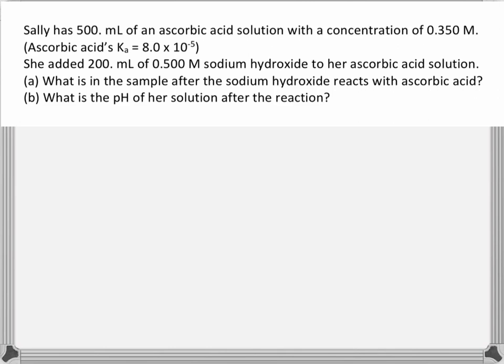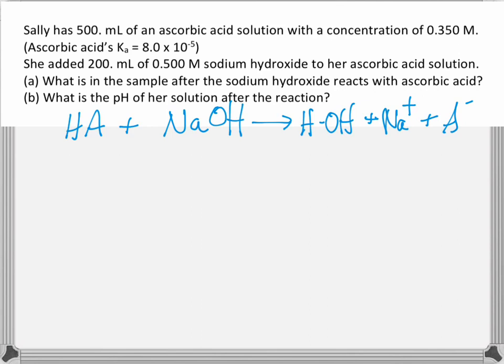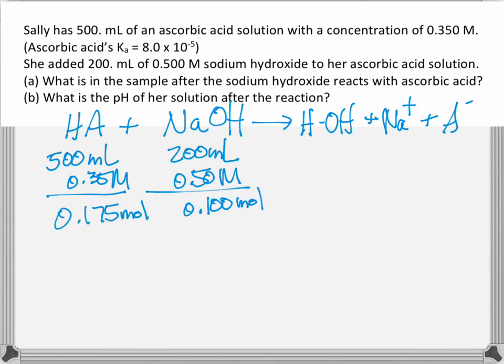When this happens, we need to think about the reaction that occurs between the ascorbic acid and the sodium hydroxide. They're going to react to form water and sodium ascorbate. In addition, we need to think about the moles of each of those materials. So we take the molarity and the volume of the ascorbic acid and the molarity and the volume of the sodium hydroxide and use those to calculate the number of moles of ascorbic acid and sodium hydroxide.